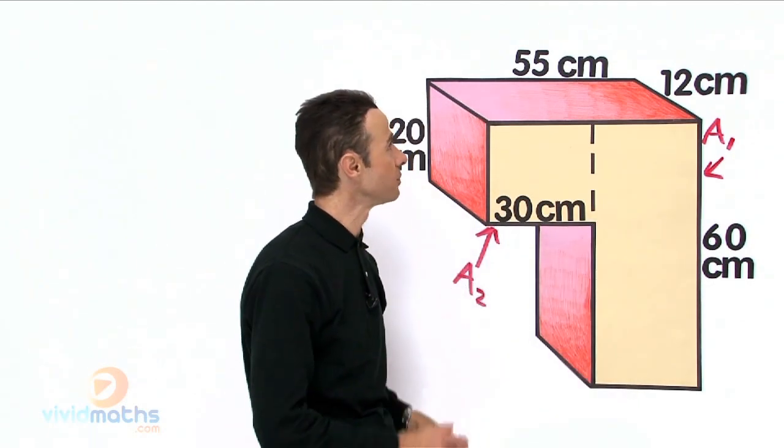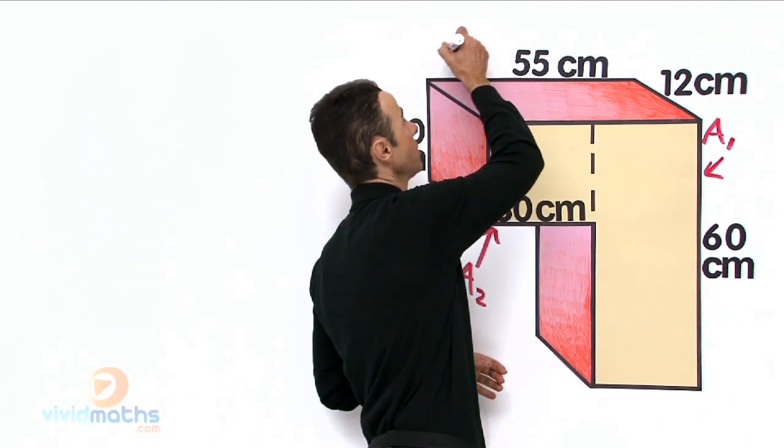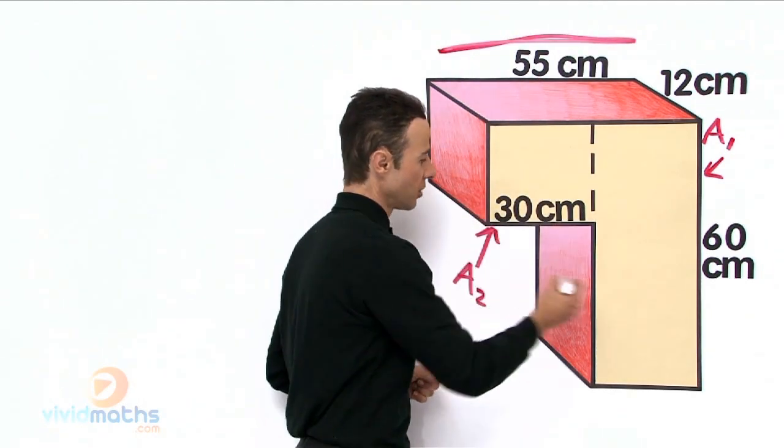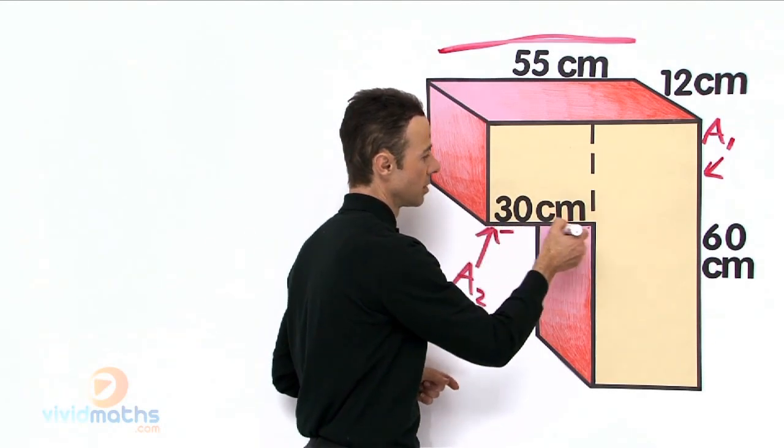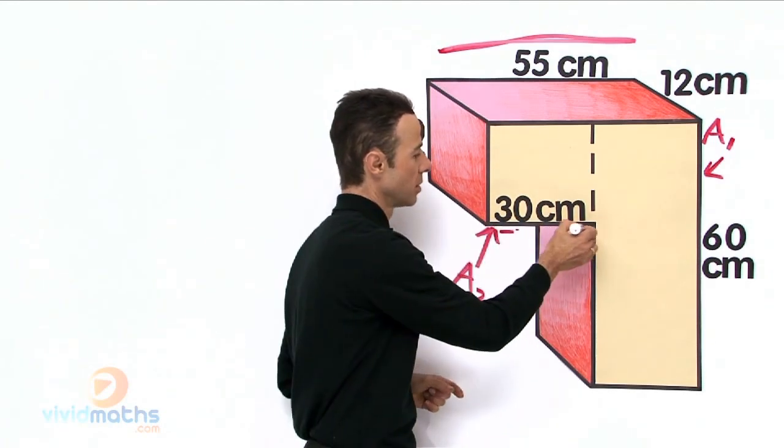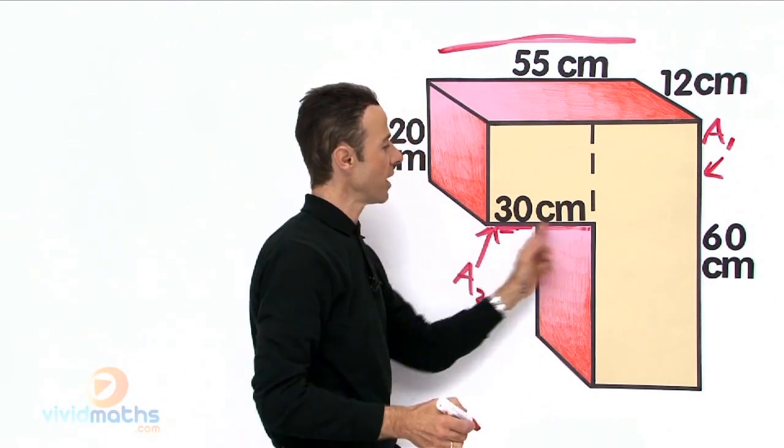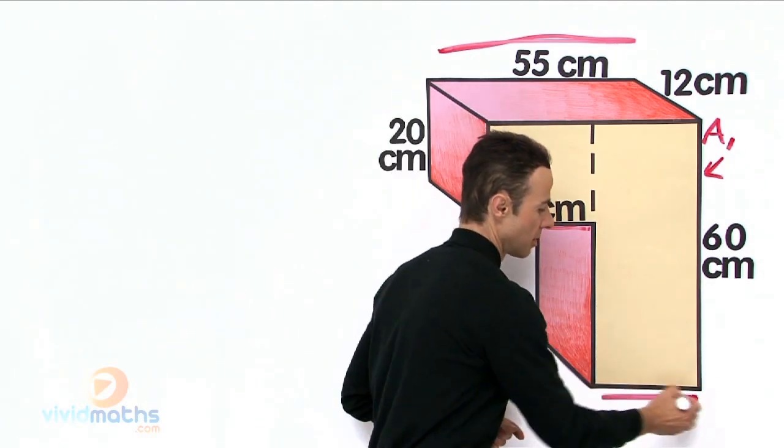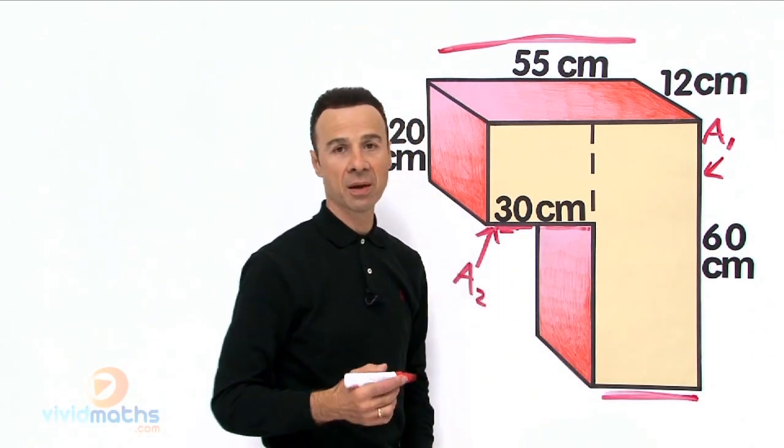So 55 minus 30 gives us 25, that will be 25 there. So let me mark it out for you one more time: the distance across here take away the distance across here, across there all the way across there. That distance there, that minus that, will give us that there or that, it is the same.